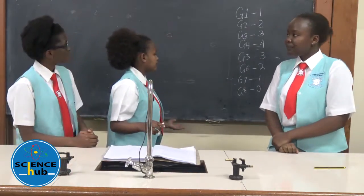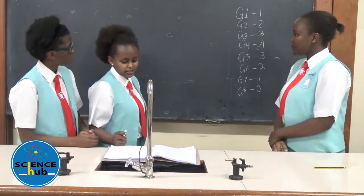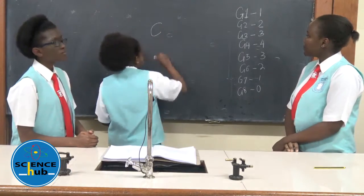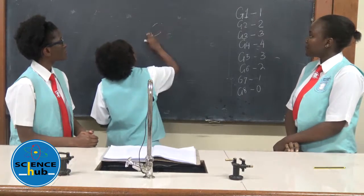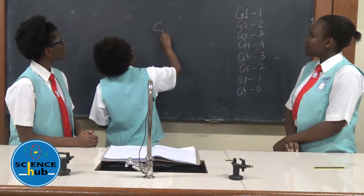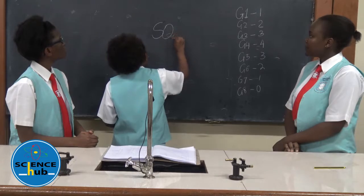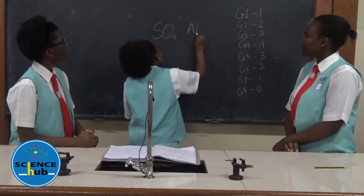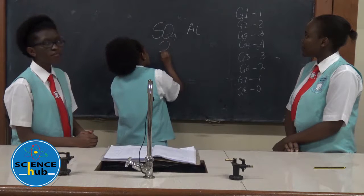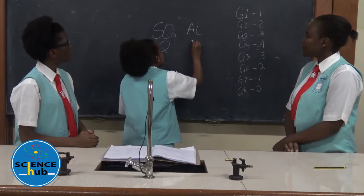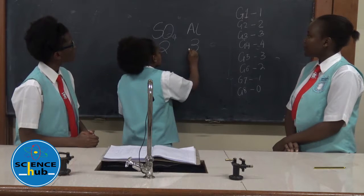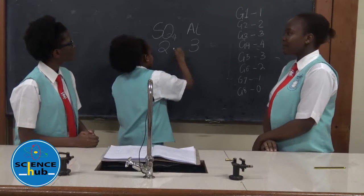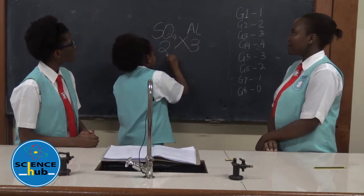So using this valency, we are going to show you an example of how to write a chemical formula. Using the symbols already taught, you have sulphate and aluminium. Sulphate has a valency of 2 and aluminium has a valency of 3. So to balance this equation, you have to interchange the valencies.